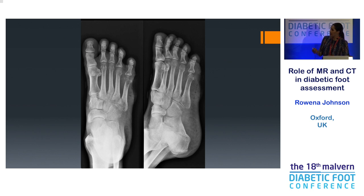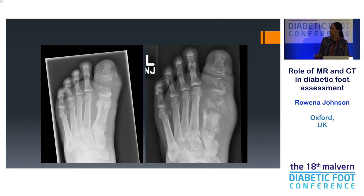You can see subtle changes at the fifth metatarsal head — the lucency and cortical destruction. On the oblique radiograph you can see soft tissue swelling, and little pockets of air in the soft tissue in the setting of infection. This more advanced example shows cortical destruction, osteomyelitis spreading into a septic arthritis, and the multifocal involvement of several bones with associated soft tissue swelling.